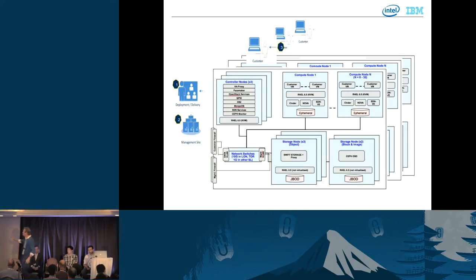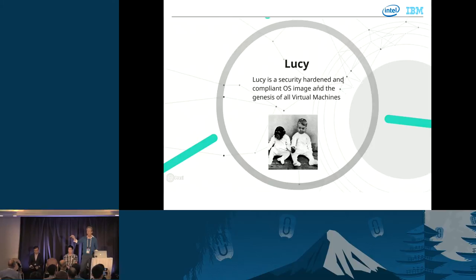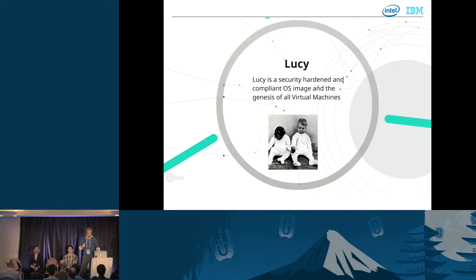Looking at all these VMs — how do we make sure they're secure? We start with what a lot of people call a secure golden image. We call ours Lucy, because it's the genesis of everything else, just like the Serengeti Lucy. We take a single image, harden it, and stamp every VM with the Lucy image. It's hardened to IBM's ITCS 104 compliance standard — password hygiene, password rotation, locking down ports, and so on.